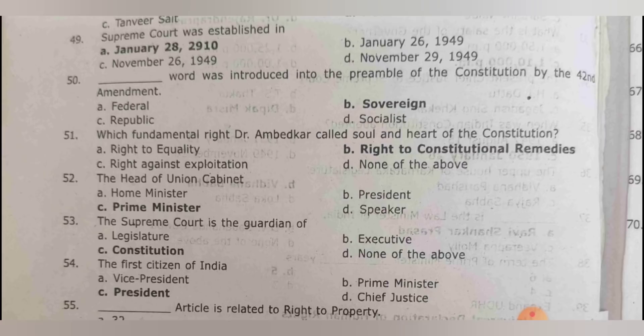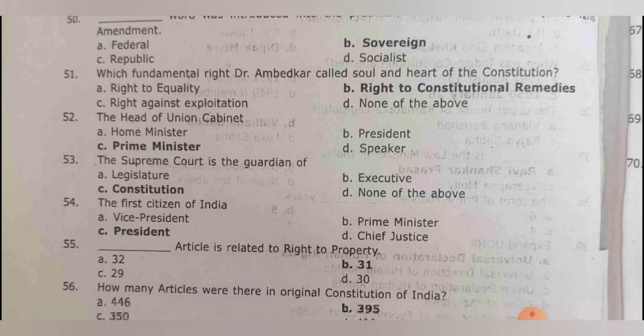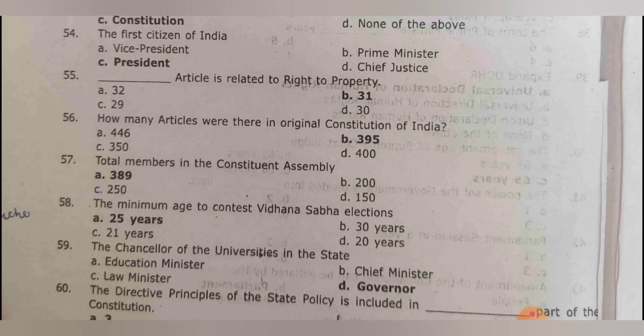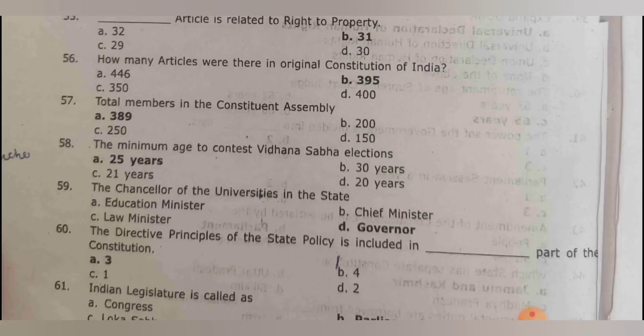Which fundamental right did Dr. Ambedkar call the soul and heart? It is the right to constitutional remedies. The head of the union cabinet is the prime minister. The Supreme Court is the guardian of the constitution. Who is the first citizen of India? The president. Which article is related to the right to property? Article 31. How many articles were in the original constitution? 395. Total members in the constituent assembly: 389.